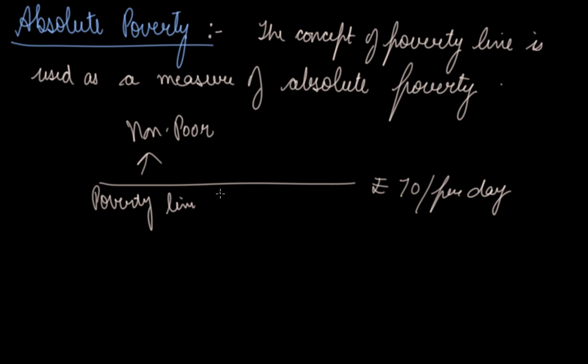Those who cannot spend rupees 70 per day even are considered as poor. According to the recent survey of 2017, there are millions of people who are not able to spend dollar 1.90 per day, which means approximately 67 or 68 rupees per day. In this way, you can find out the absolute poverty through using the poverty line.